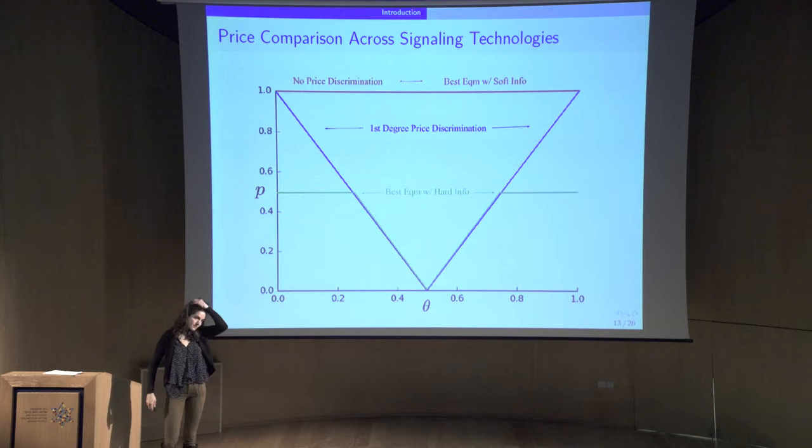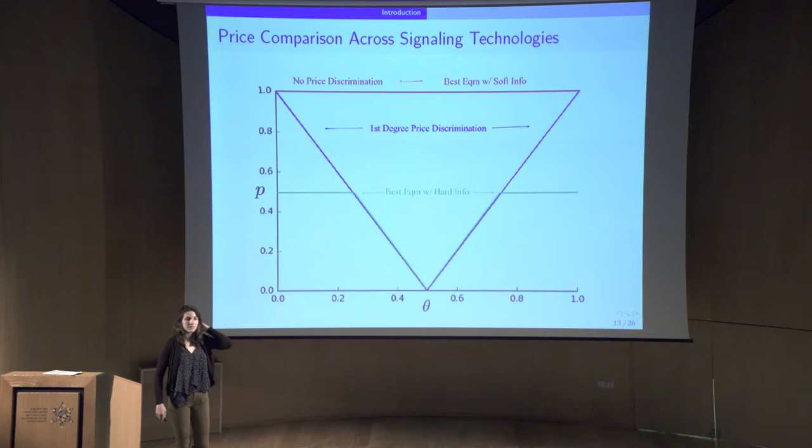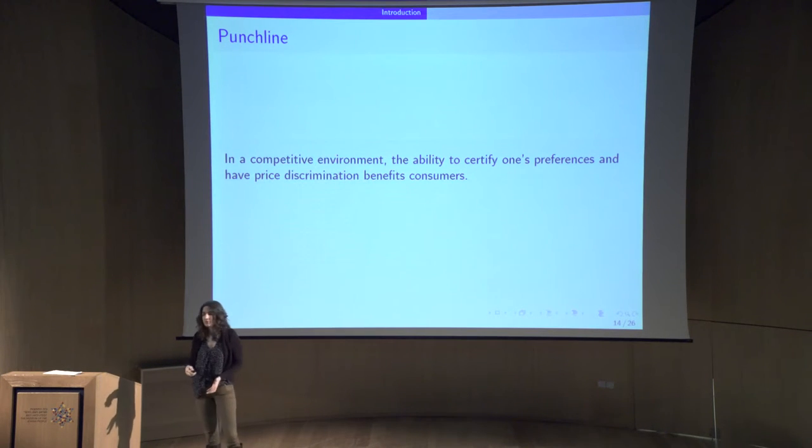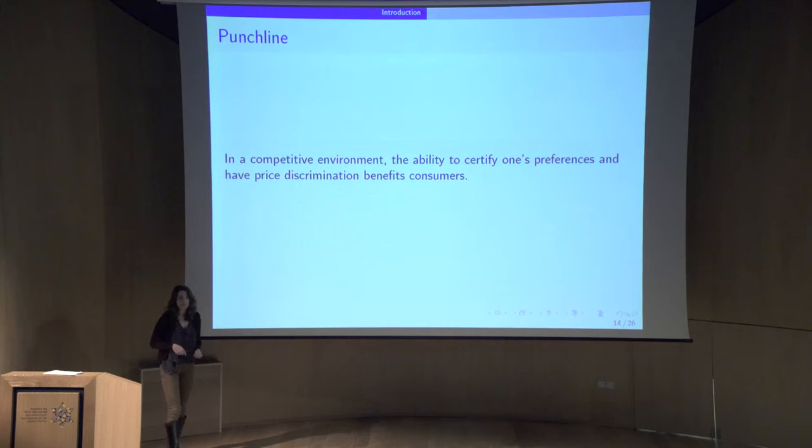So I'm going to spend the rest of my talk trying to formalize this point a little bit. But this is the main takeaway. In a competitive environment, the ability to certifiably or credibly signal your preferences can be beneficial to consumers. That is to say, price discrimination with hard information can be beneficial under competition. This was not true in the Monopoly case.